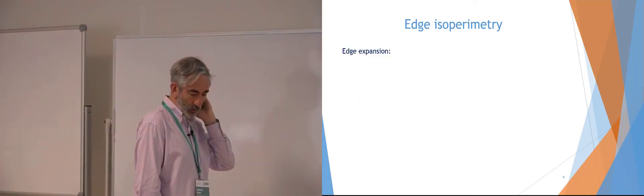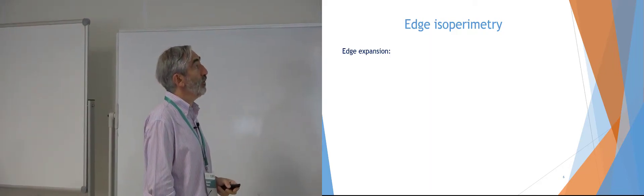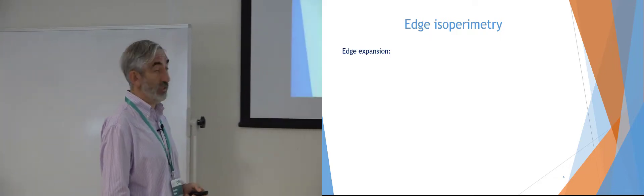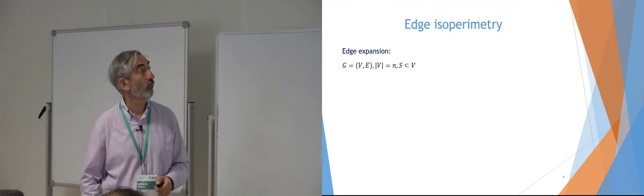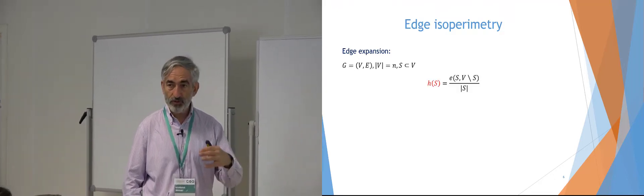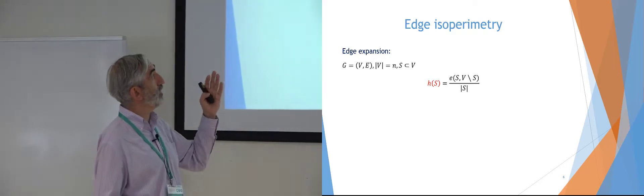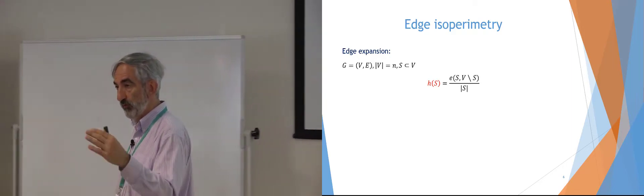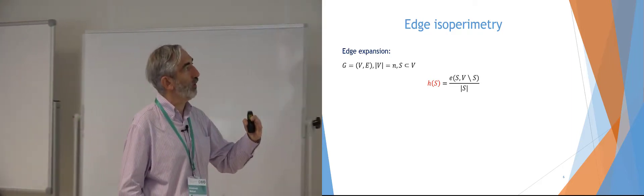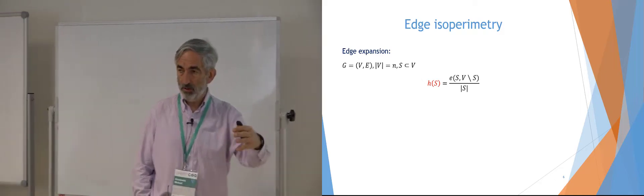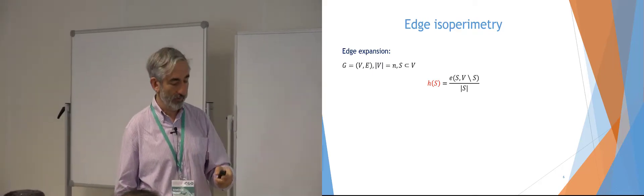Our result is formulated in terms of expansion properties, or isoperimetry. Given a graph G and a subset S of vertices, we define H(S) as the number of edges crossing between S and V minus S, divided by the size of S. This shows what proportion of edges touching S go outside of S. The larger this quantity, the better connected and the better expanding your graph is.